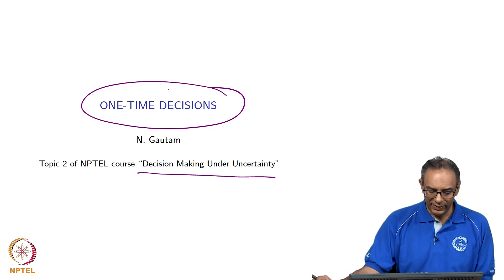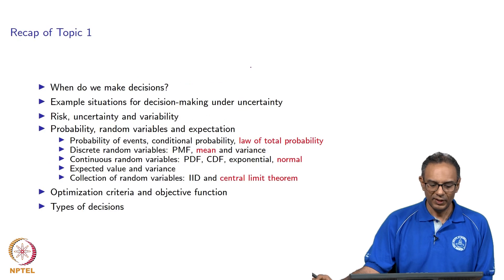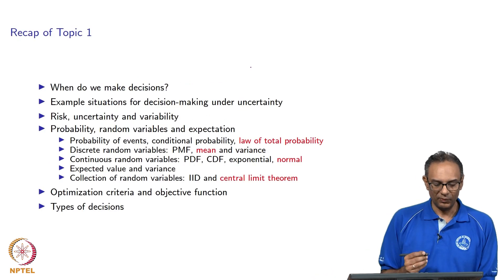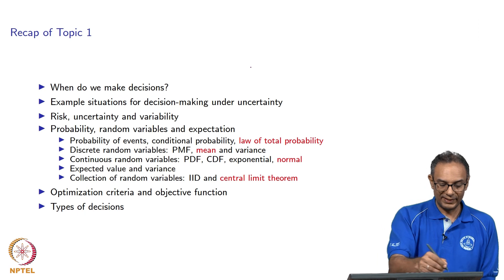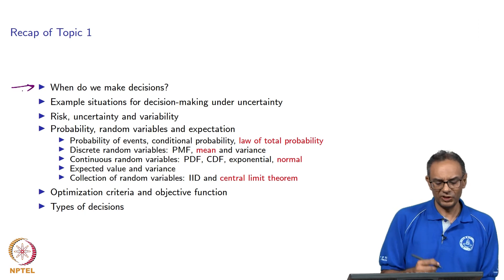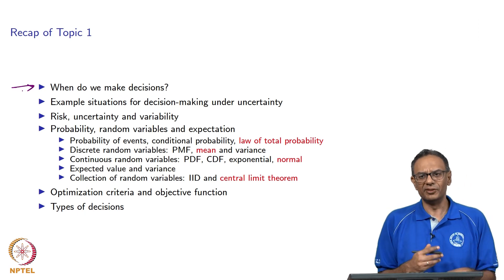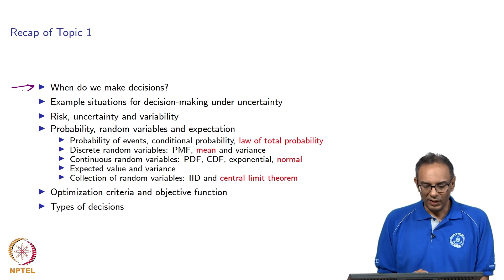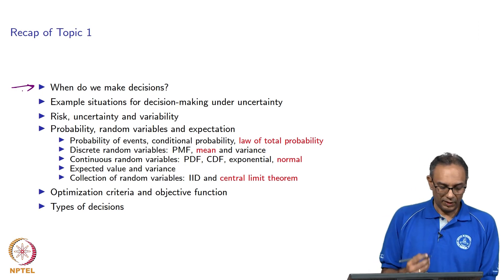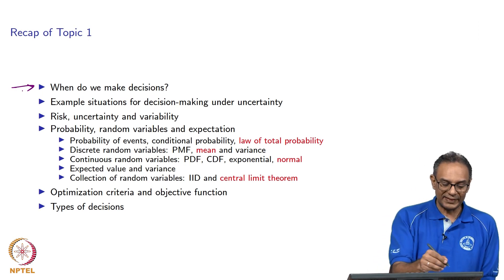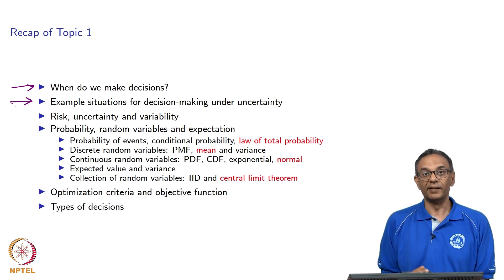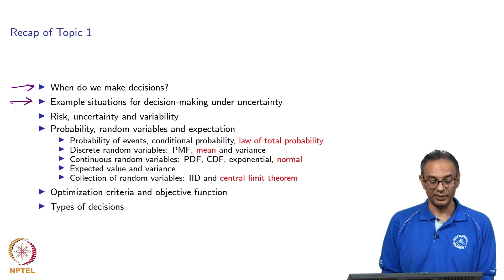I want to spend a little bit of time recapping what we saw in Topic 1. We started with asking the question: when do we make decisions? We saw that we make decisions every day, all the time. We also looked at a few example situations in personal life where we were making decisions under uncertainty.